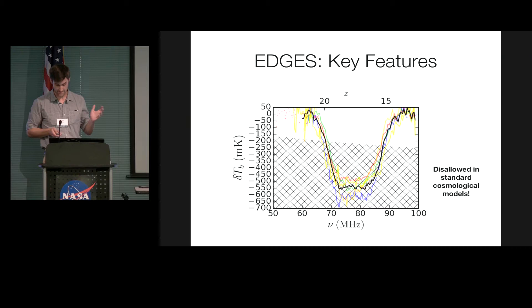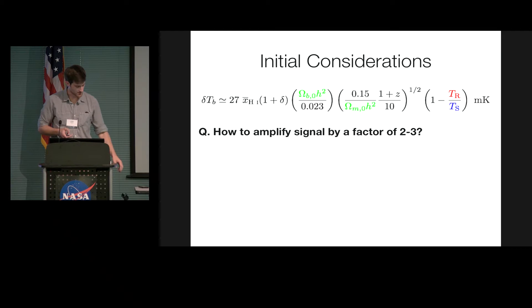So the signal that was measured is stronger than we would have thought, which means, naively, that the gas must be colder than we thought it could be. At least that's the first idea that came out of this field. So you can scratch your head, as many people did after this result came out, and ask, well, what do we have to change in order to get a signal this strong? And I'm running out of time here, but I'm almost to the end.